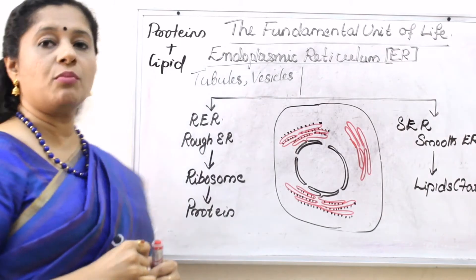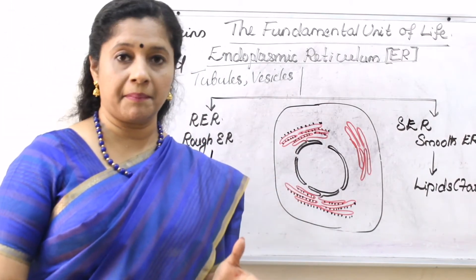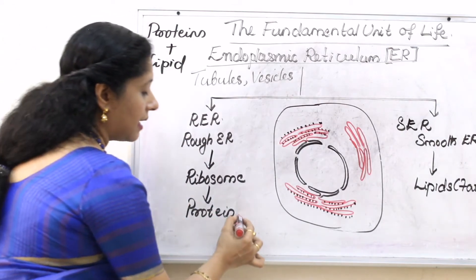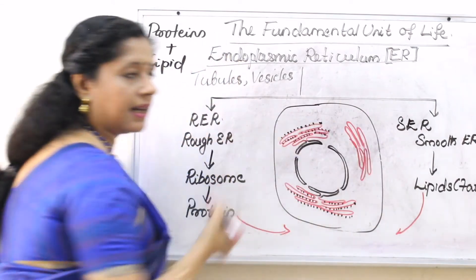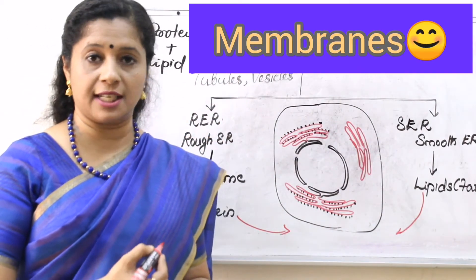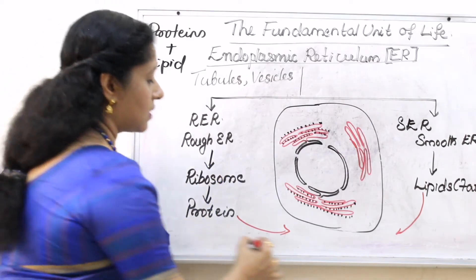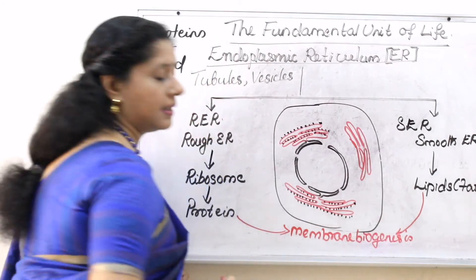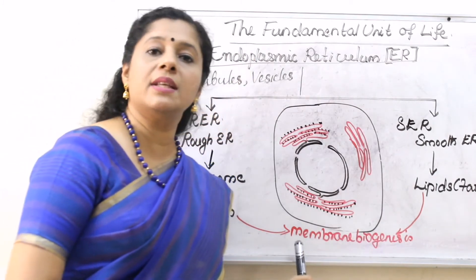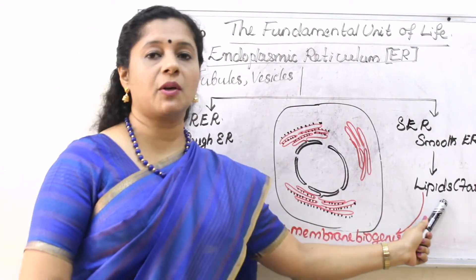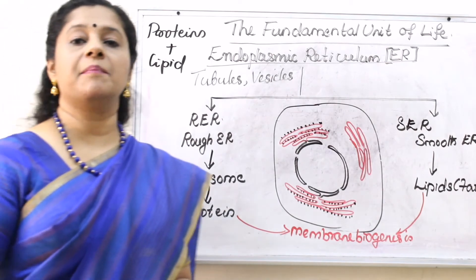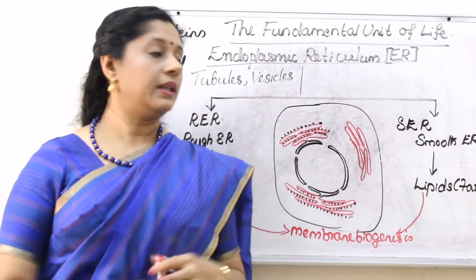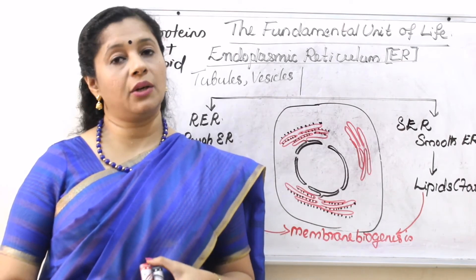When the cell has to make a new membrane or new organelles, it has to make the membrane. For making the membrane, the cell needs proteins as well as lipids. So proteins produced by the RER and lipids produced by the SER can be used for making new membranes which are lipoproteinaceous in nature — that is, made up of lipids and proteins. This process is called membrane biogenesis. Genesis means synthesis — synthesis of biological membrane. Some proteins and lipids also act as hormones or enzymes required for the cell.